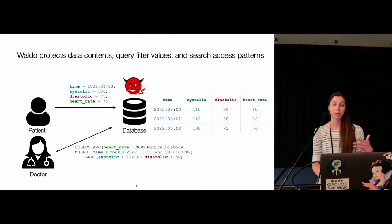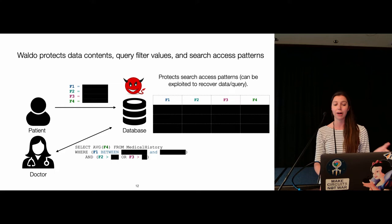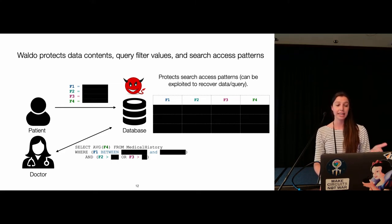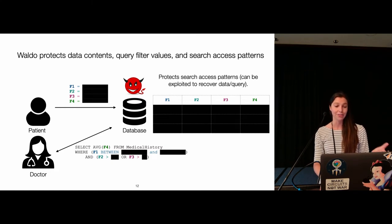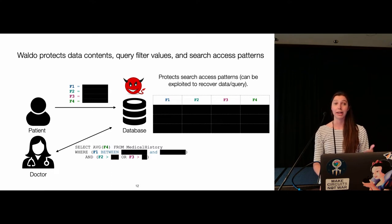To make this concrete: the attacker doesn't learn the data contents — it just learns opaque identifiers associated with each feature, like F1, F2, F3, F4. When the doctor makes a query, the attacker can see that the doctor is querying the average of feature F4 where F1 is between some interval, F2 is greater than some value, or F3 is greater than some other value. The attacker cannot see the search access patterns — for example, which records match a particular predicate or even how many records match.